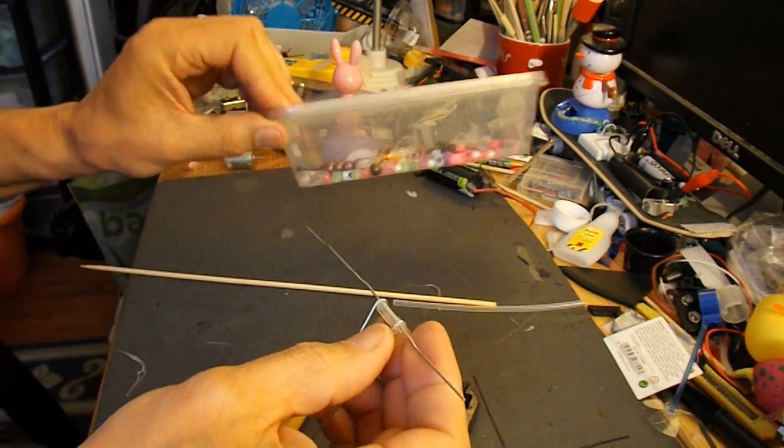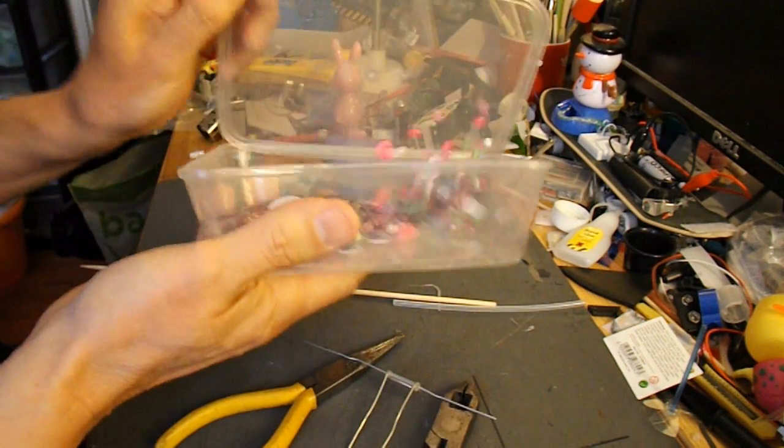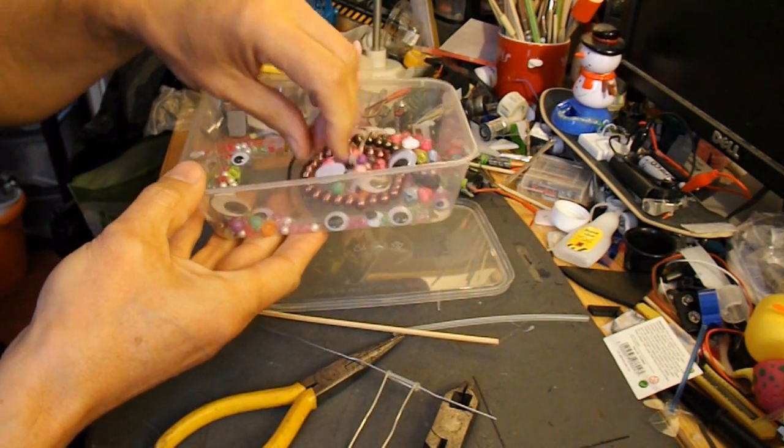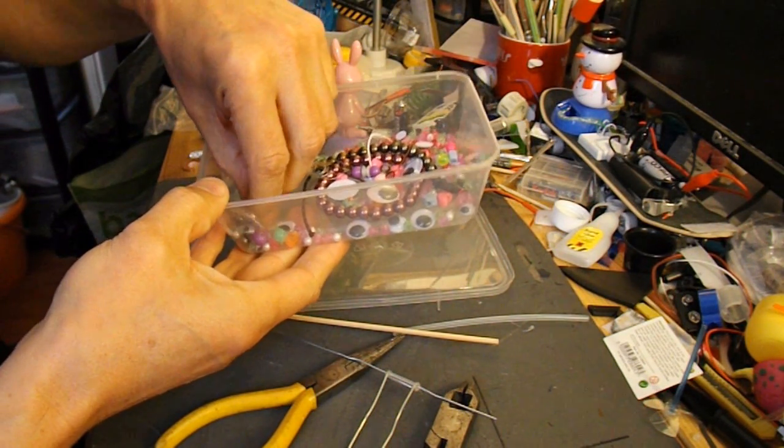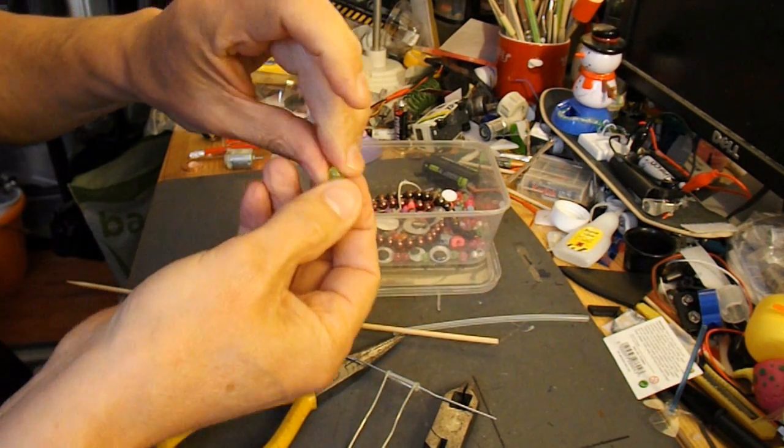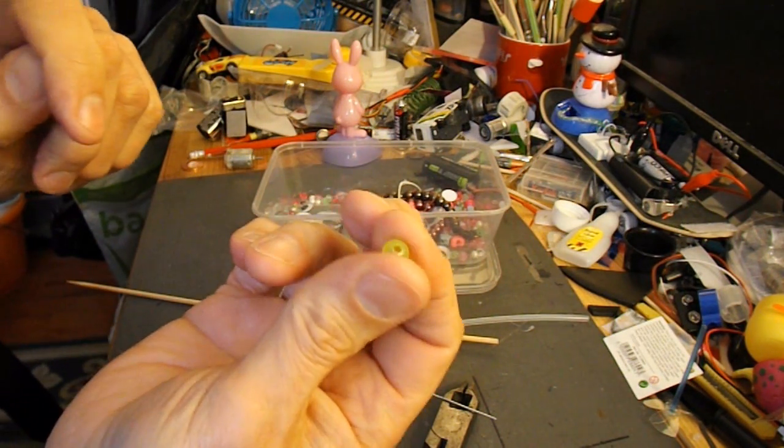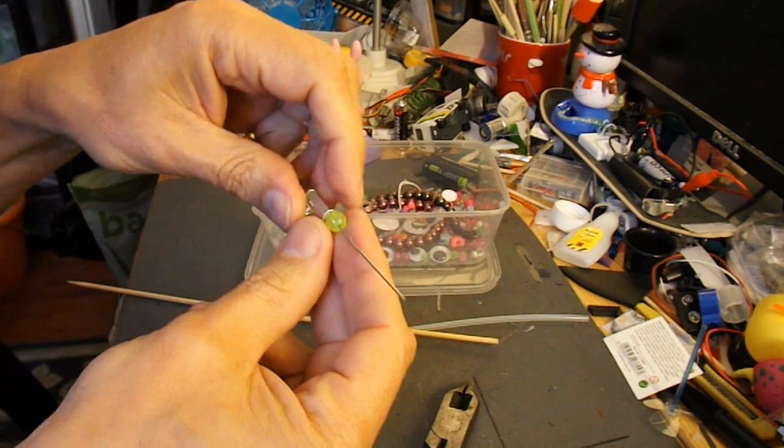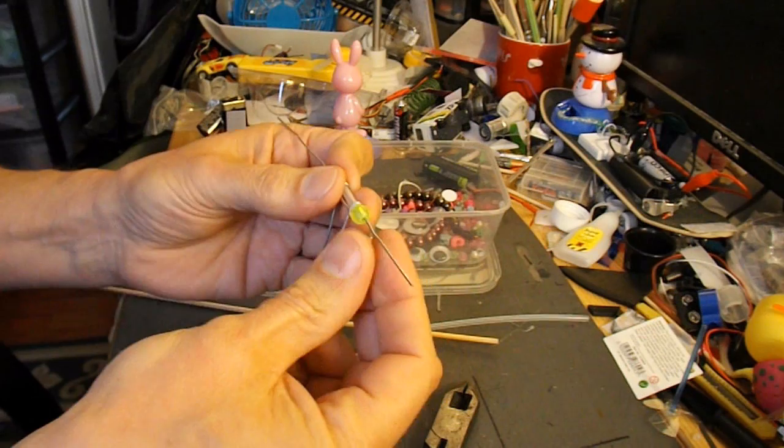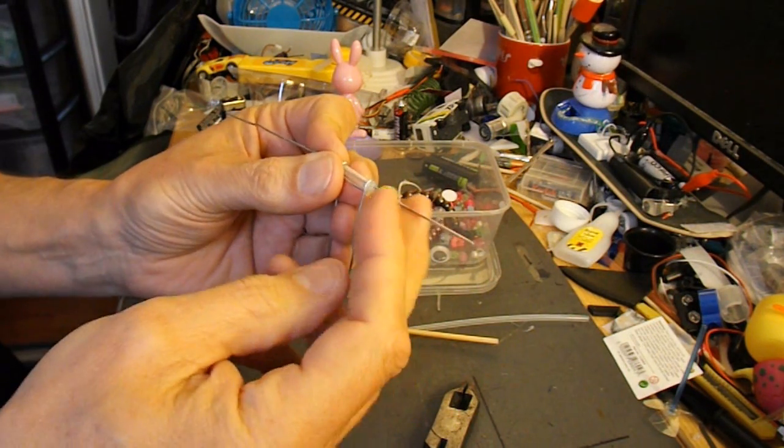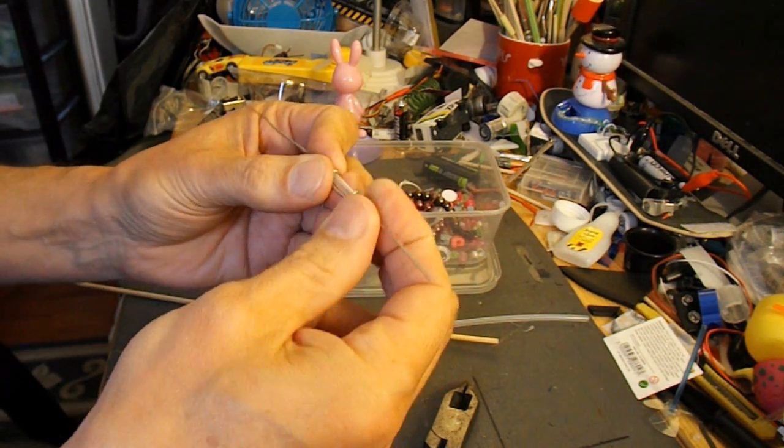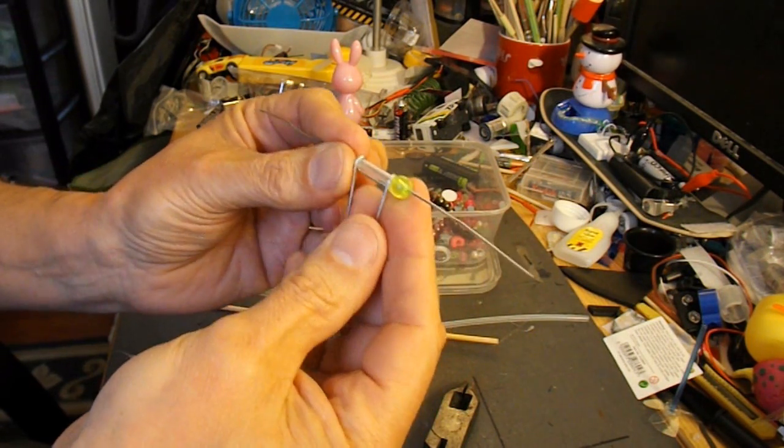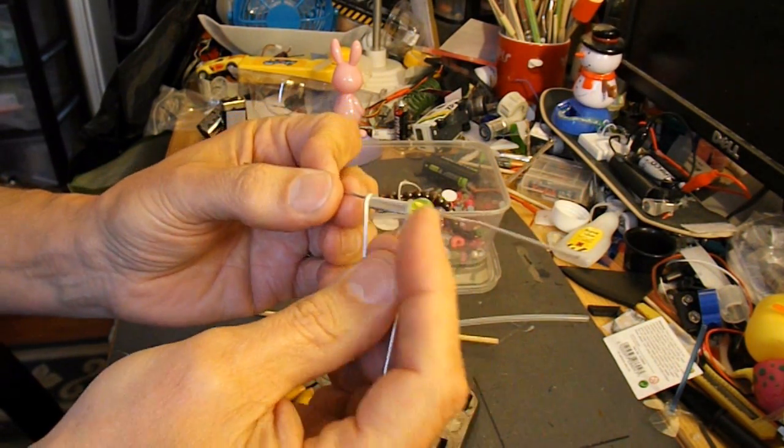And we're going to put a plastic bead on it anyway. That's probably a bit bigger than you really need. That's for the propeller to rub against. So, in essence, that's it.